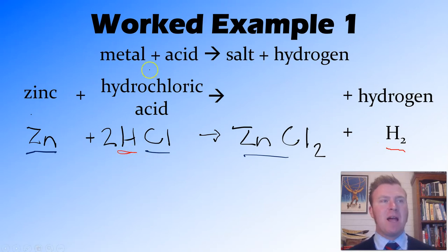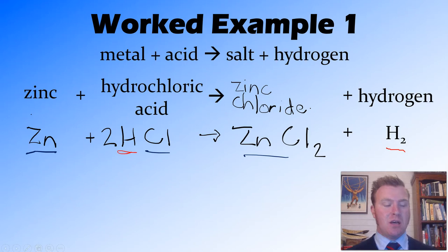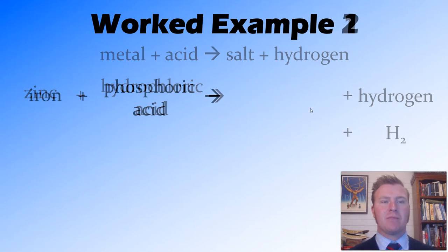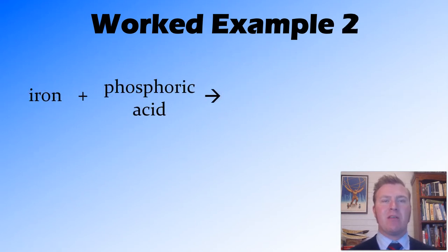So now we've got 2 chlorines, so that's balanced, and that also gives us 2 hydrogens, so that's balanced there. That equation's now balanced, and we can write our salt into our word equation. Zinc chloride. That's the end of that one.